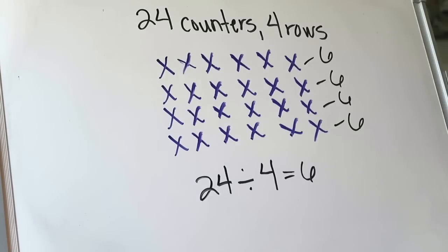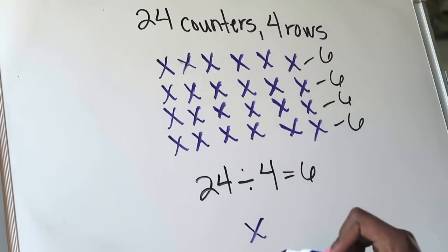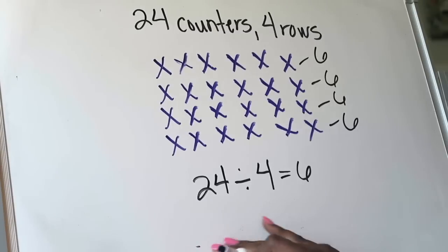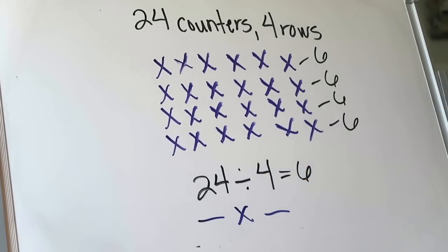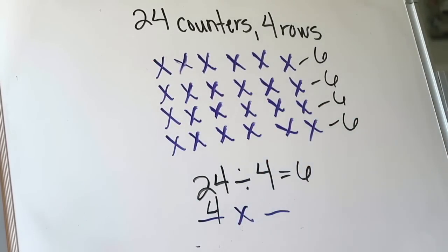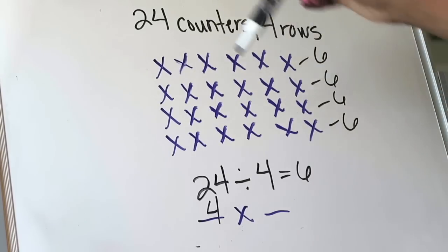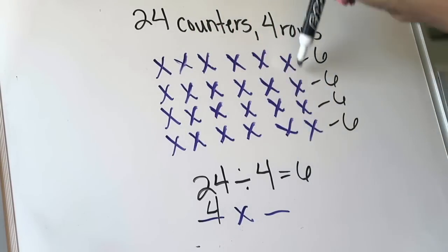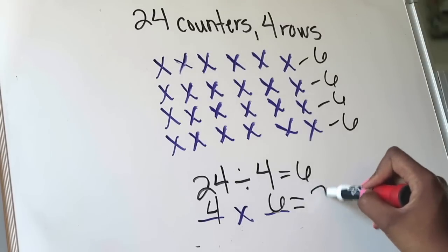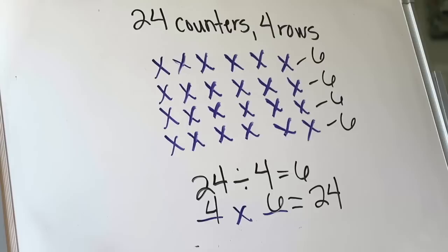We can also look at this and come up with a multiplication sentence to match. I'll put down my multiplication symbol with a space for my first factor and a space for my second factor. My first factor represents how many rows I've created — I created four rows. My second factor represents how many columns I created going top to bottom — one, two, three, four, five, and six. My product is how many counters I had in all, which is 24. So that tells me that four times six has a product of 24.